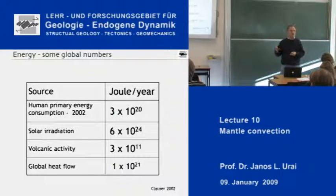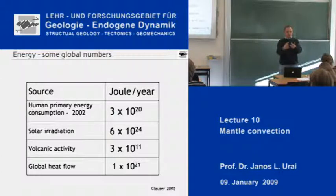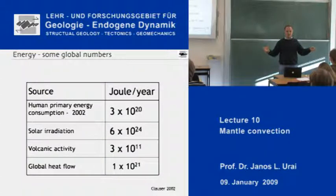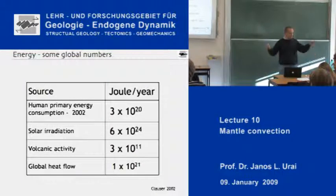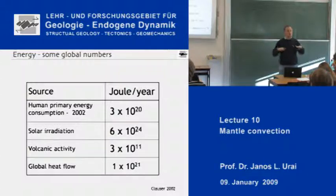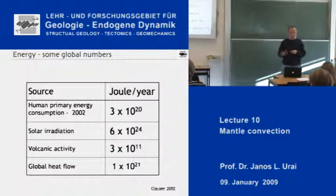Professor Clauser has a very nice way of saying it: it is about a light bulb worth of energy coming out of a football field. So if you put a light bulb underneath a football field and the energy came out of it, that is the kind of heat which is, on average, coming out of the Earth everywhere.